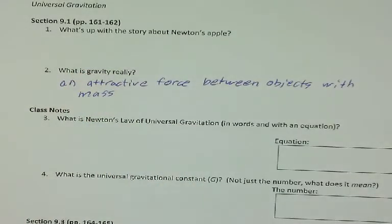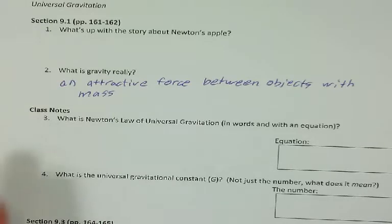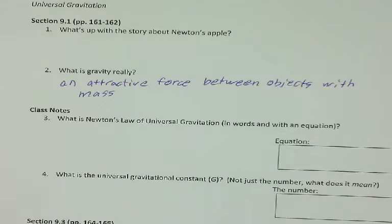So what gravity actually is, is it's an attractive force between any objects that have mass. So that explains why free fall happens, because the object falling has mass, the earth has mass, and therefore there's an attractive force between them.